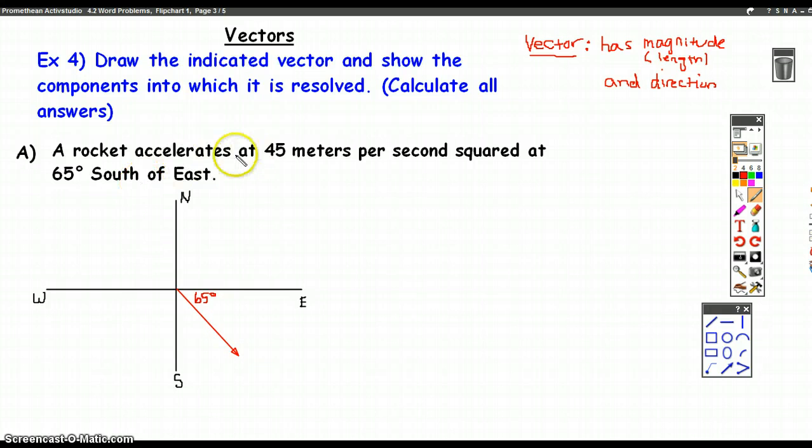Now, the rocket accelerates at 45 meters per second squared. We're going to write that as our hypotenuse. This is my vector. It has direction, right? It's going in a particular direction, and it has a length. The length of this is 45 meters per second squared.